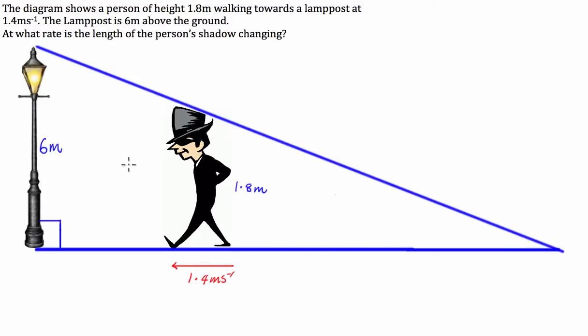Well for this, we're going to use similar triangles. So if I just make this diagram a little bit easier to see, the similar triangles are going to be if I draw a red line down here and a red line down here. I know that this line here is 1.8 meters and this line here is six meters.